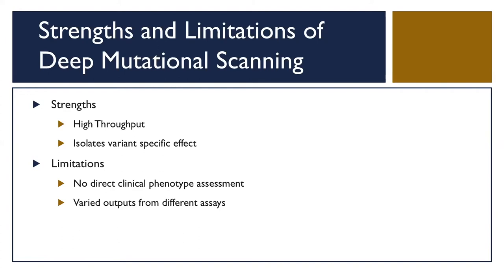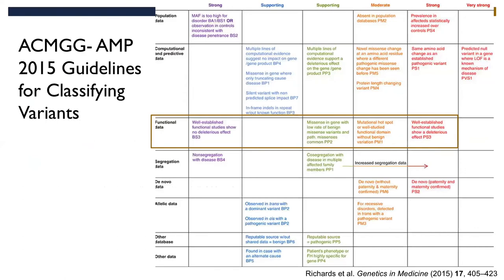Any slide about variant classification is required to have the ACMG guidelines. Looking at functional data in those guidelines, you can get supporting, moderate, and strong evidence toward pathogenicity with a functional study, but you can only get strong evidence against pathogenicity — there's no supporting or moderate benign evidence category for functional studies. I hope that'll change when they update the guidelines.